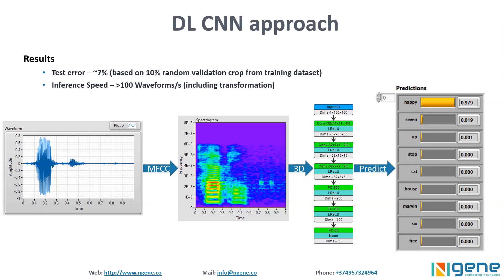We transform our speech recognition problem into an image classification problem, and based on these images we can build and train a convolutional neural network for image classification. We are using a standard convolutional neural network with several convolutional layers and fully connected layers for classification. This architecture on this dataset provides around seven percent error, or 93 percent accuracy, on a validation set generated by randomly sampling audio files from the whole dataset.